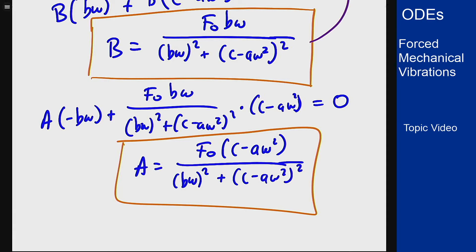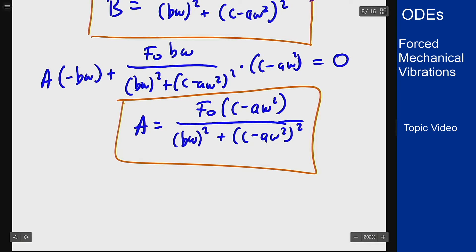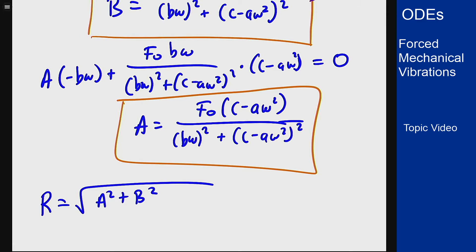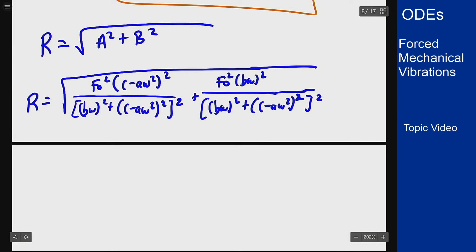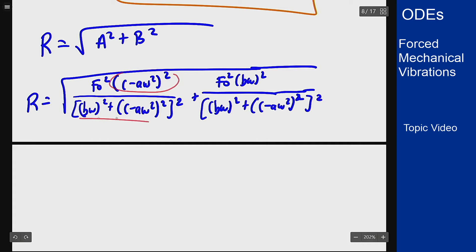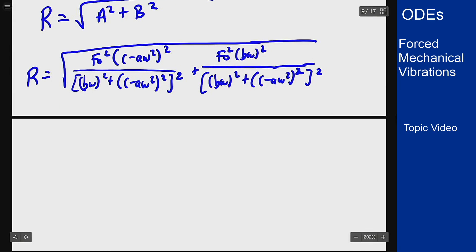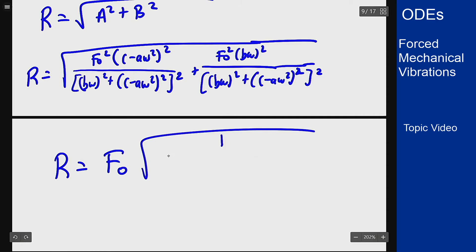The last thing we want to do is figure out r, the total amplitude. We know r is the square root of A squared plus B squared. Plugging in and simplifying — these share the same denominator, and when I add them I notice the top becomes b omega squared plus c minus a omega squared, so one of those cancels. Pulling f0 out of the square root, I get that r equals f0 times the square root of 1 over b omega squared plus c minus a omega squared, all squared.